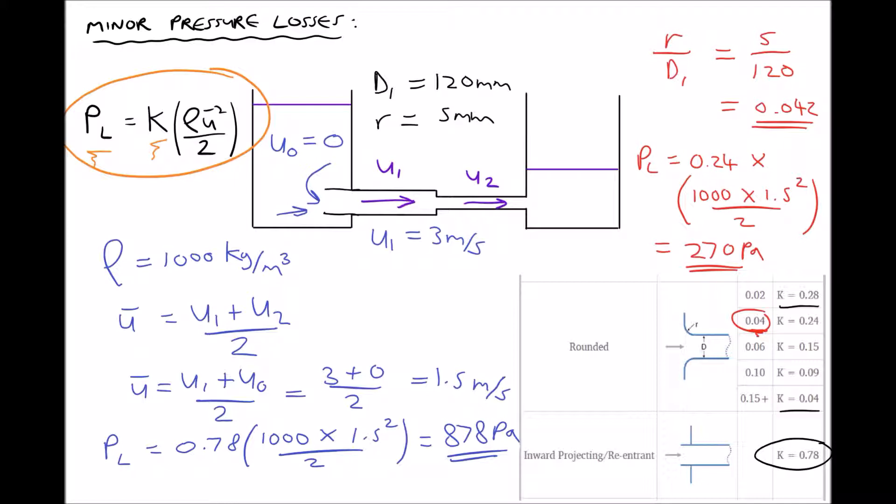The process for calculating the resistance coefficient for square reductions and square expansions is a little bit more complex and is beyond the scope of this video, but it is something that can be done to determine the minor pressure losses that might exist in any given fluid pipework system.